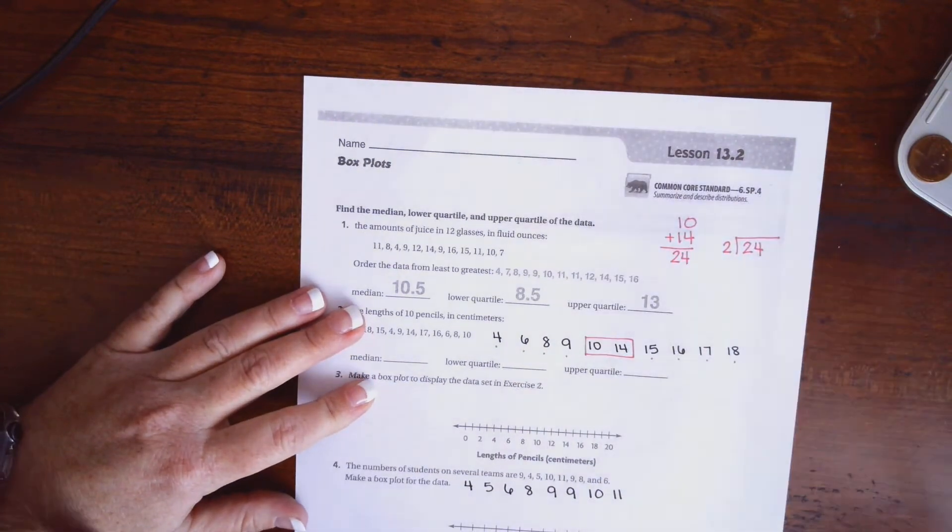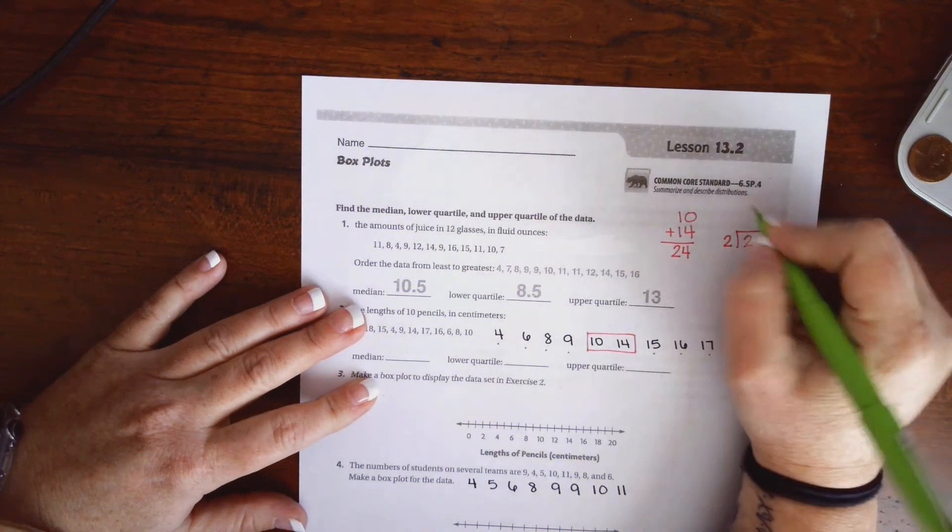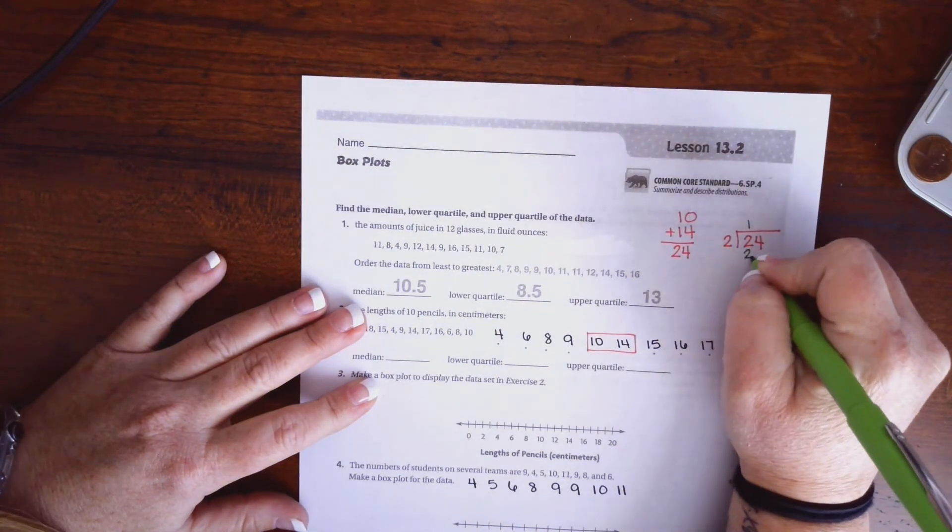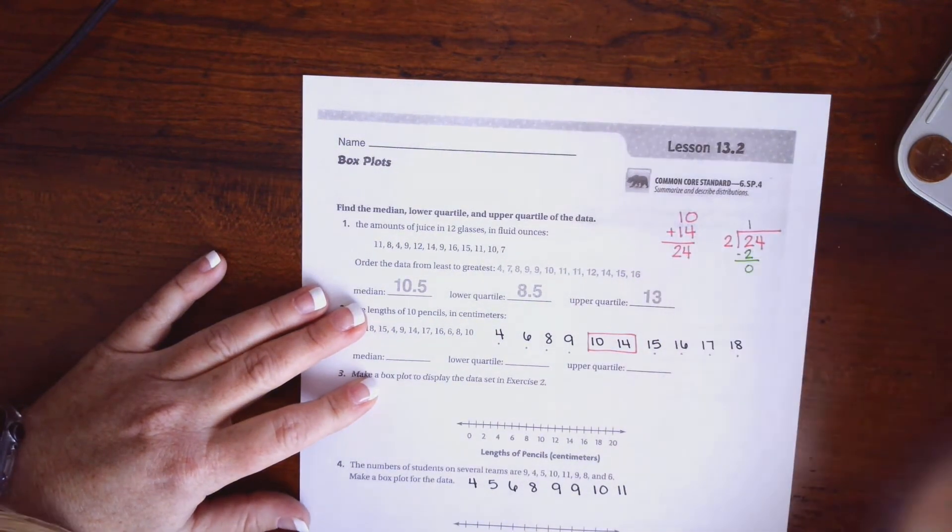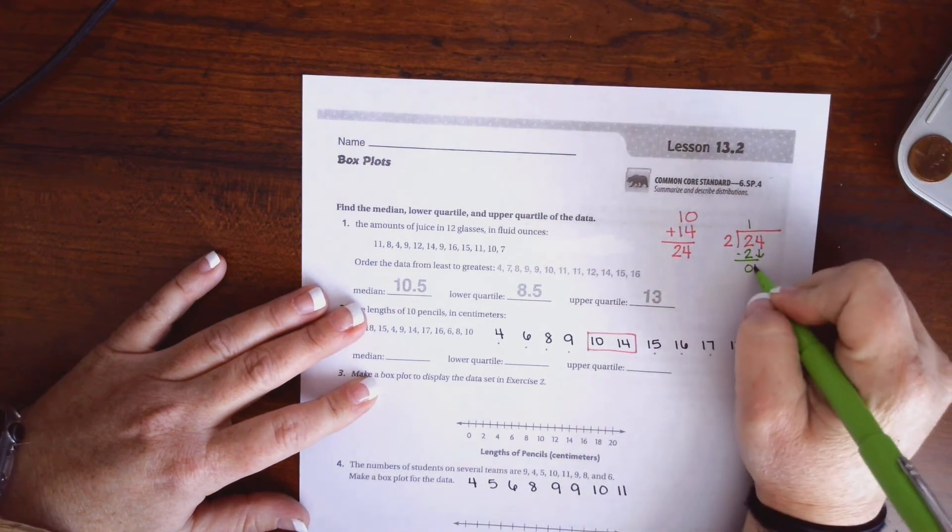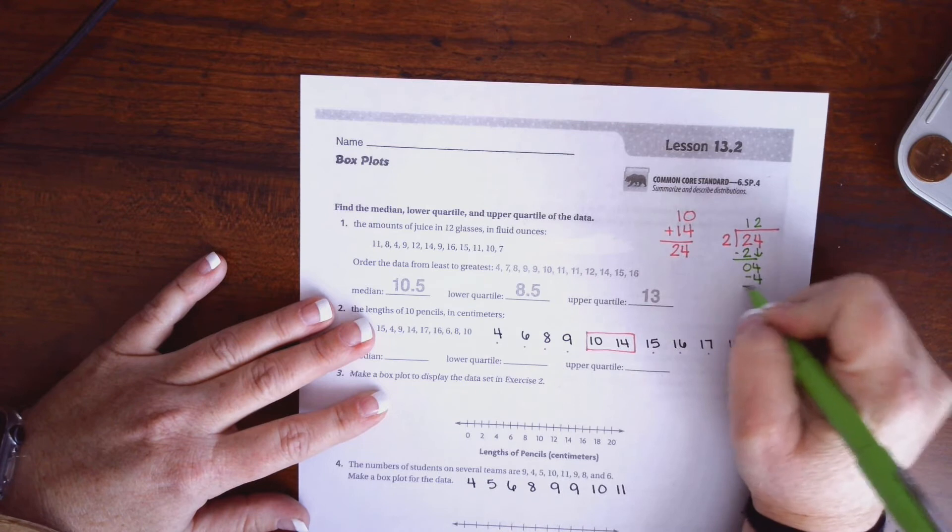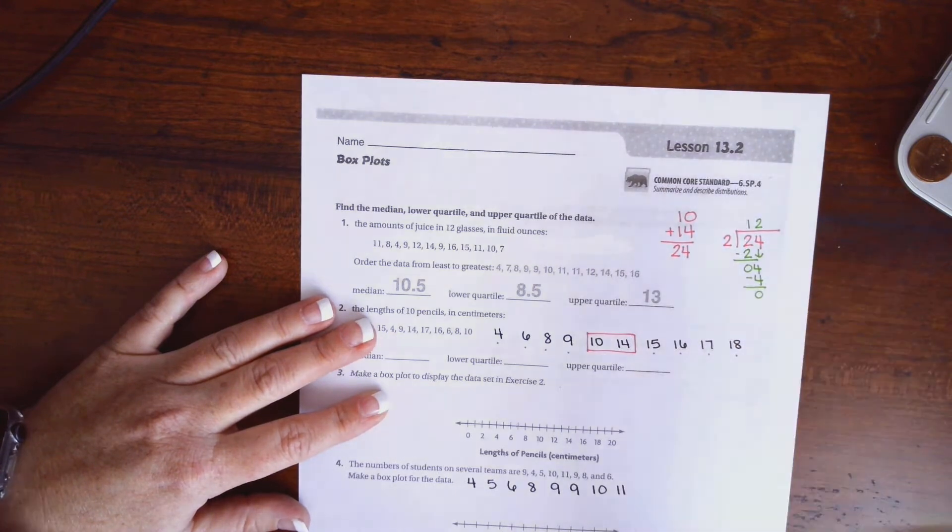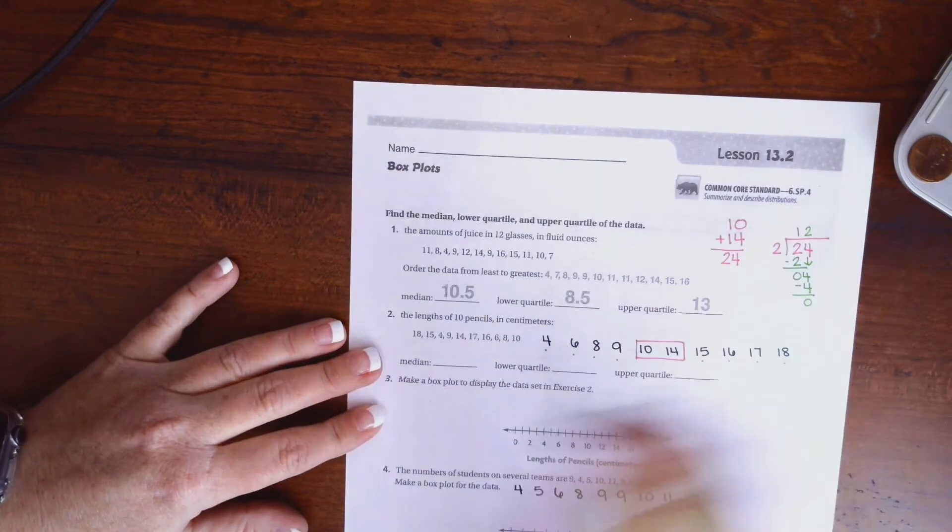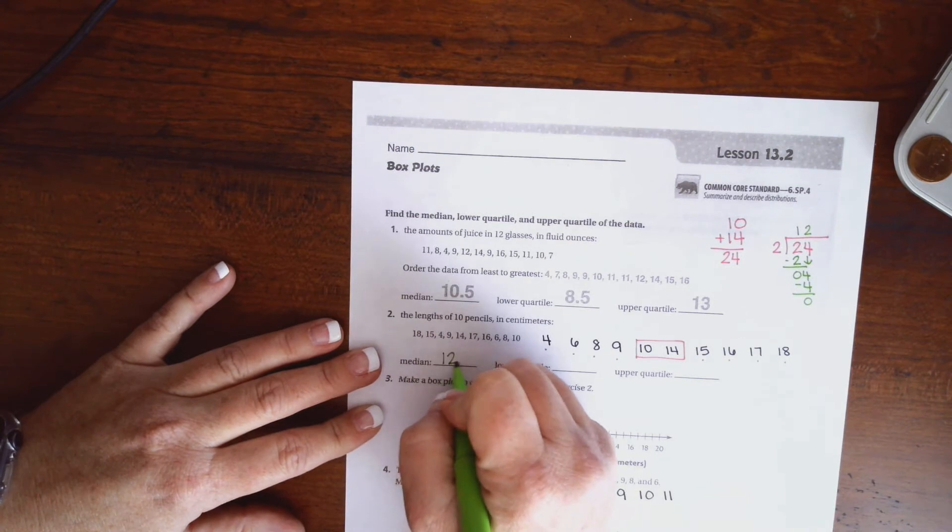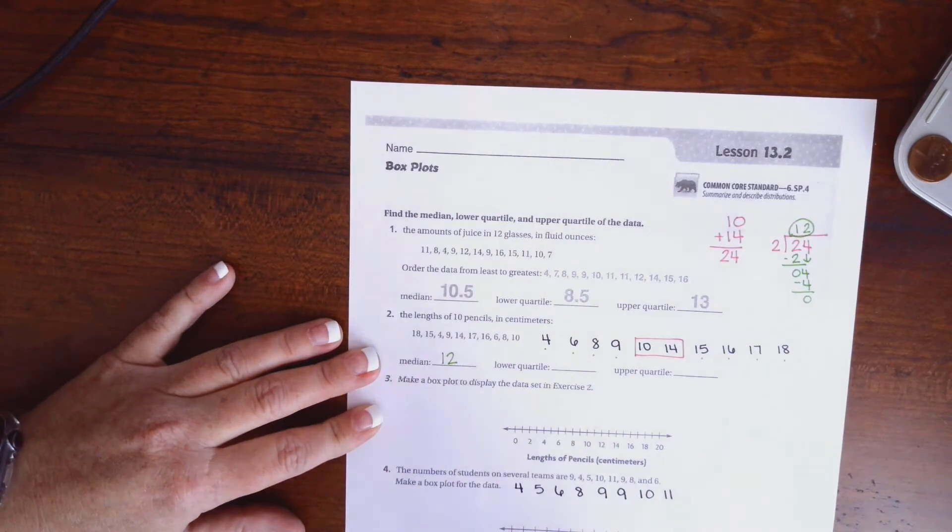2 goes into 2 one time, that is 2. So I get 0, bring down my 4, and 2 goes into 4 two times. End up with 0. So now my median is going to be 12.